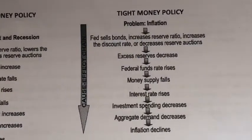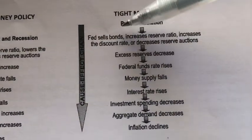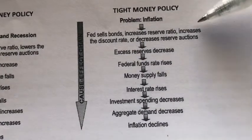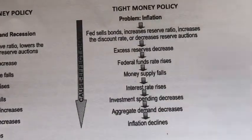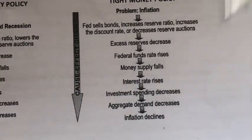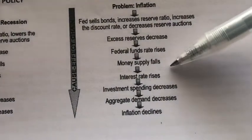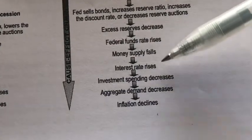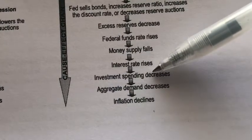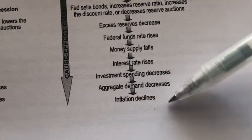Alternatively, if the problem was inflation, the central bank would adopt a tight money policy: selling bonds or securities in the open market, increasing the reserve ratio, or increasing the discount rate. All of these tools decrease the excess reserves of the commercial banks, reducing their lending ability, causing money supply to fall. When money supply falls, interest rate rises. Since borrowing is more expensive, investment falls, leading to a fall in aggregate demand — and this is how the government tries to tackle the inflation problem.